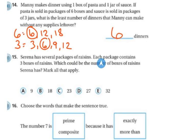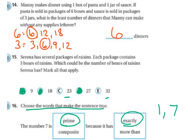Serena has several packages of raisins. Each package contains 3 boxes of raisins. Which could be the number of boxes of raisins that Serena has? Mark all that apply. I'm looking at my multiples. 3 times 3 is 9, so 9 could be an option. 18 could be an option, and 27 could be an option. 23 and 32 are not multiples of 3. Choose the words that make sense in the number sentence. The number 7 is prime because it has exactly two factors, 1 and 7.